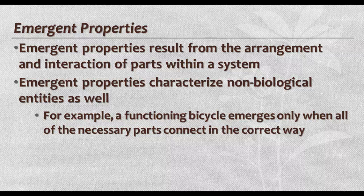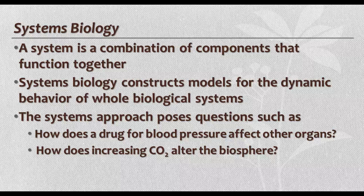Emergent properties result from the interaction of parts within a system and how they're arranged together, and they characterize non-biological things as well as biological ones. The example given is a bicycle — you can have all the pieces, but it doesn't function as a bicycle until everything is put together in the correct way. That's when the property of being able to ride it emerges. A system is a combination of components that work together, and systems biology looks at models for the behavior of the whole biological system.